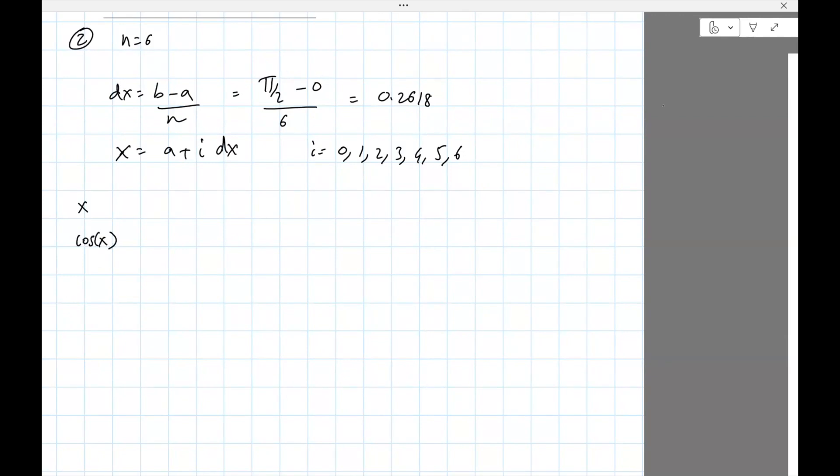So I need to put i equals 0, so that will be 0, cosine of 0 is 1. Next I have i equals 1, so a plus dx, so 0 plus dx would be 0.2618. So cosine of this is 0.9659, and we can just keep doing that. We get 0.5236, 0.8696, then 0.7854, 0.7071, then 1.0472, 0.5, 1.3090, 0.2558, and the last value is 1.5708, cosine of that is 0.